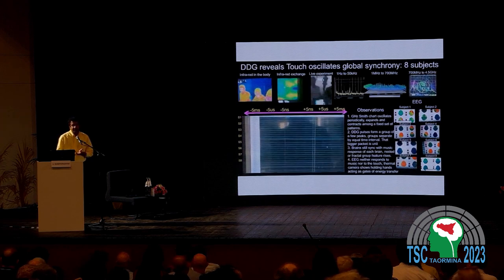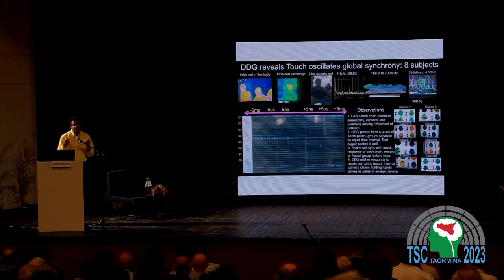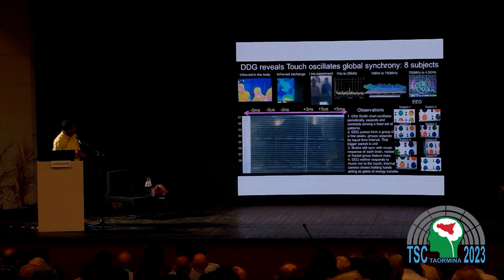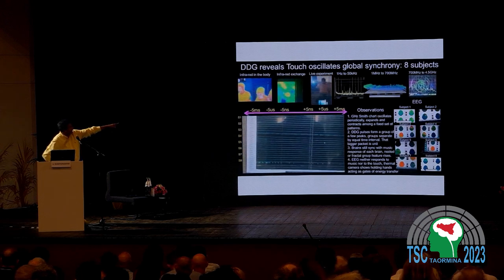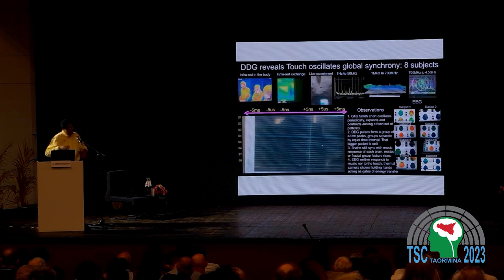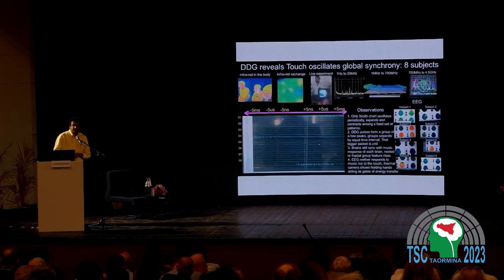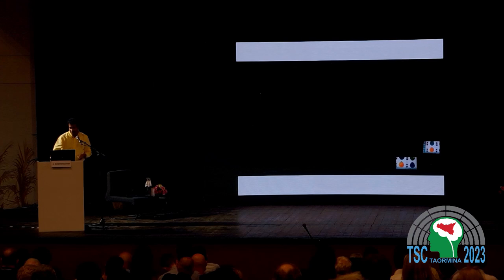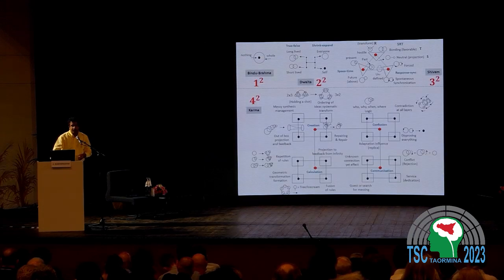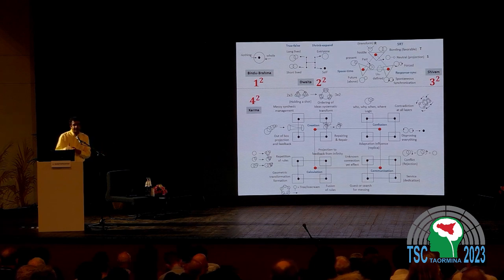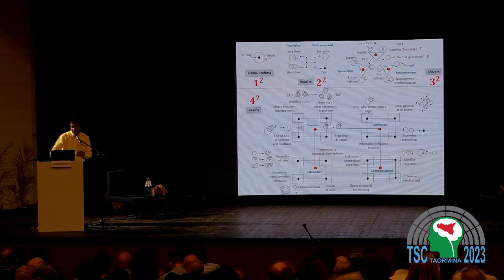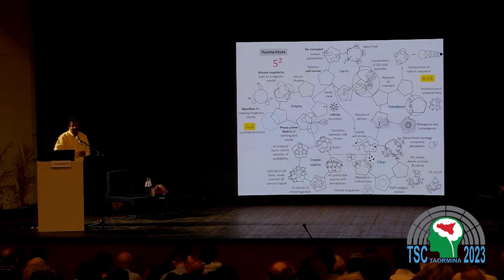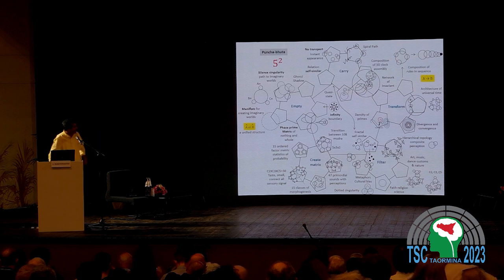At the gigahertz scale you find very complex patterns emerging. If there is no global synchronization, we could not have seen this. Two persons are not enough — you need to increase to three, four, five, six, seven, eight — at least eight persons to collectively see the invariant. We then listed the invariant for different emotional states and what kind of geometric shapes are coming up from the DDG.